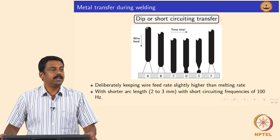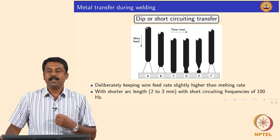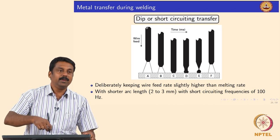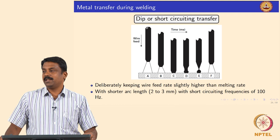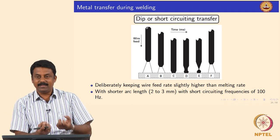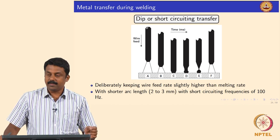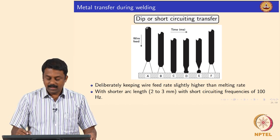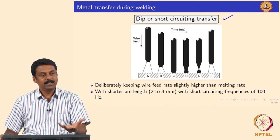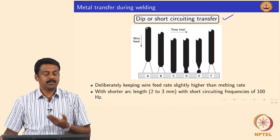So, another mode of transfer. So far we looked at free flight transfers, and you can also achieve stable transfer by dip. What do you mean by dip? You can touch the droplet once it formed onto the pool, and when you pull it back you change the force balances. You can overcome the surface tension because the liquid pool surface tension would make sure that the droplet is detached. That kind of transfer is a dip transfer or short circuiting transfer. This is a part of non-free flight transfer. In free flight transfer, droplets are transported from the tip by free flight. You can also achieve transfer by short circuiting, and there are a lot of advantages to having a short circuiting transfer.